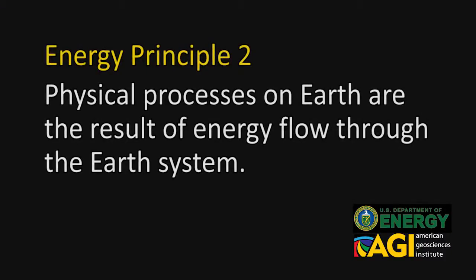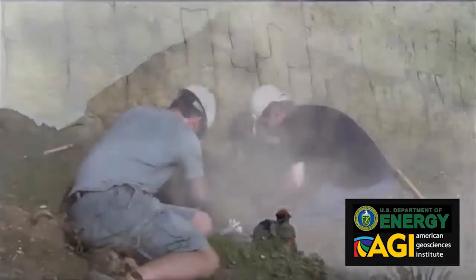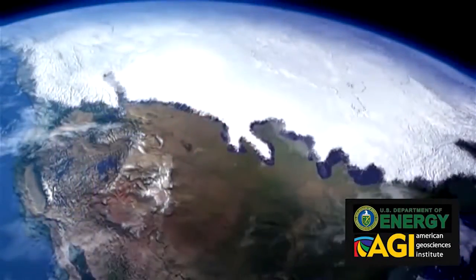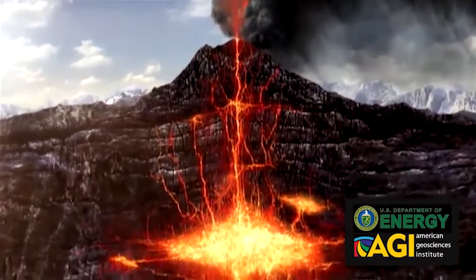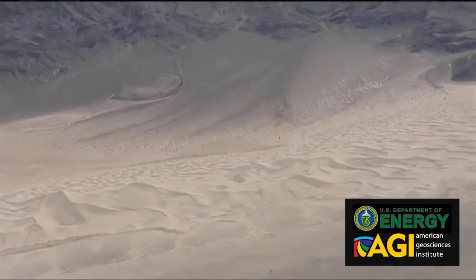This is Energy Principle Two: physical processes on Earth are the result of energy flow through the Earth system. Earth is constantly changing as energy flows through the system. Geologic, fossil, and ice records provide evidence of significant changes throughout Earth's history. These changes are always associated with changes in the flow of energy through the Earth system. Both living and non-living processes have contributed to this change.